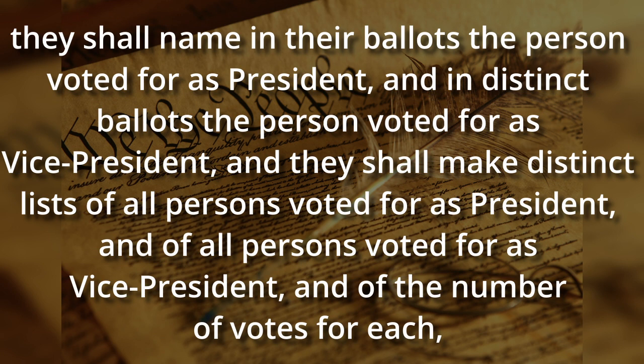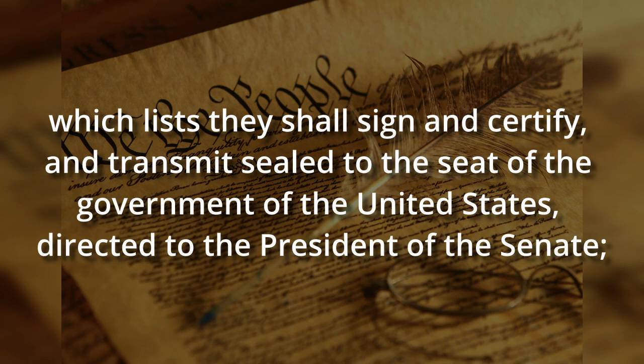They shall name in their ballots the person voted for as president and in distinct ballots the person voted for as vice president. They shall make distinct lists of all persons voted for as president and of all persons voted for as vice president and of the number of votes for each, which list they shall sign and certify and transmit sealed to the seat of the government of the United States, directed to the president of the Senate. Since most state laws appoint their electors in a winner-take-all manner, all the electors vote unanimously for their party's candidates. These electors are party apparatchiks, so they simply vote for their party's ticket, which was established through a combination of primary elections and other internal political machinations. Once the electors have done their duty, the list is signed, certified, and sent to the sitting vice president in their role as president of the Senate.